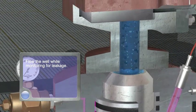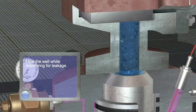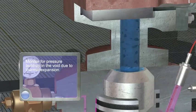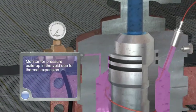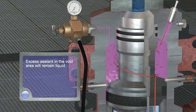Flow the well while monitoring for leakage. Monitor for pressure build-up in the void due to thermal expansion. Excess sealant in the void area will remain liquid.